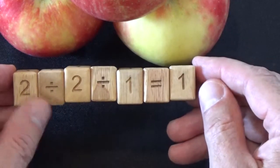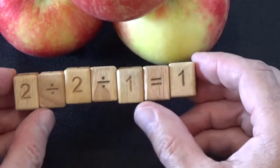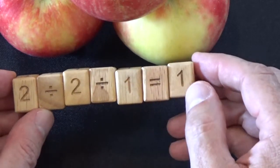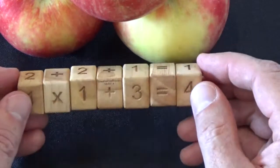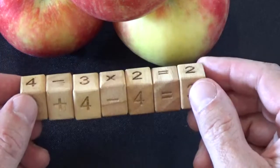And finally, 2 divided by 2 is 1 divided by 1 equals 1. So a correct equation on all four sides.